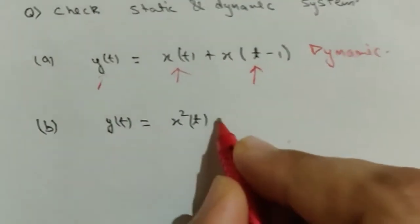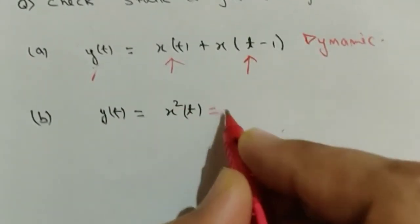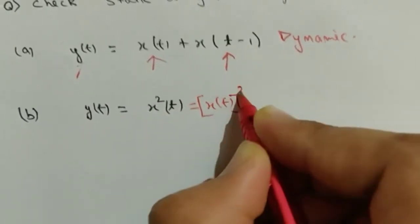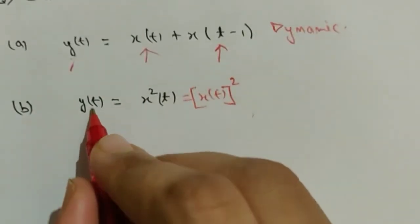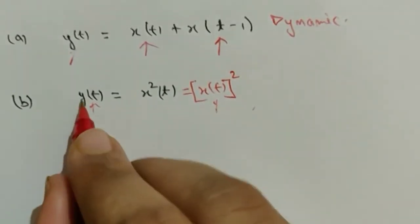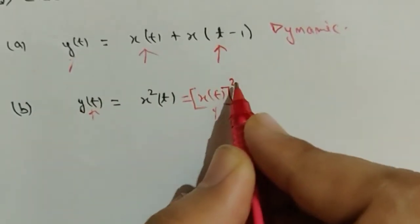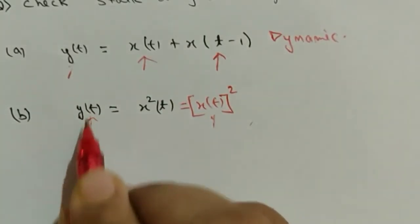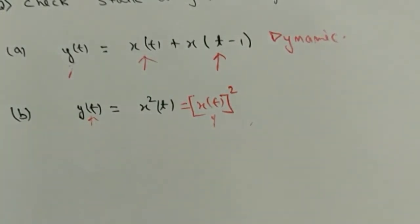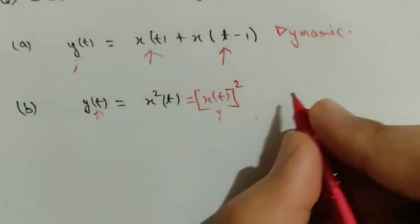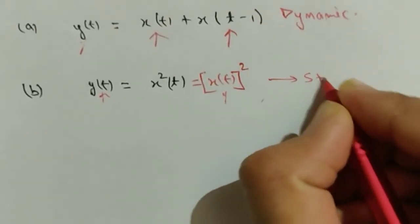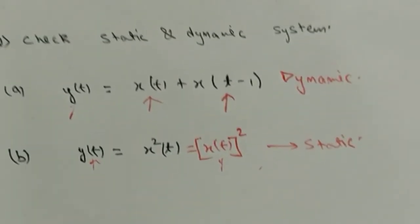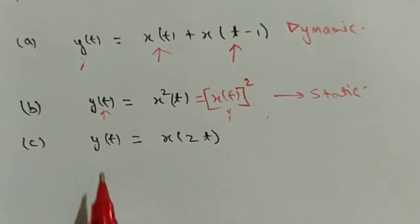Next question: y(t) = x²(t), which can be written as [x(t)]². Put t = 1 on both sides: y(1) = [x(1)]². At the same instant, input and output are present, so it depends on present values. Therefore this is a static system.